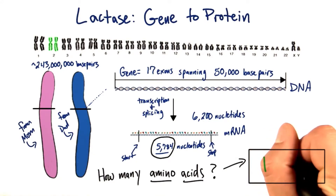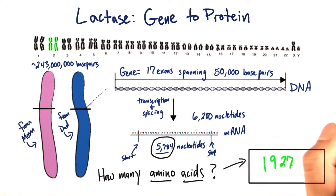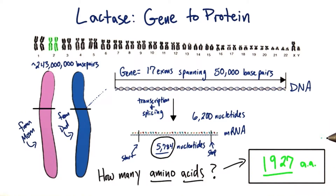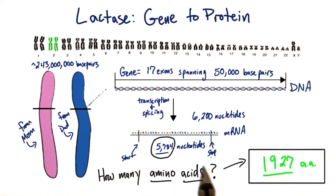The answer is 1,927 amino acids. Now, if you had any trouble coming up with this, it's probably because you need to go back and really focus on what gets translated by a ribosome.